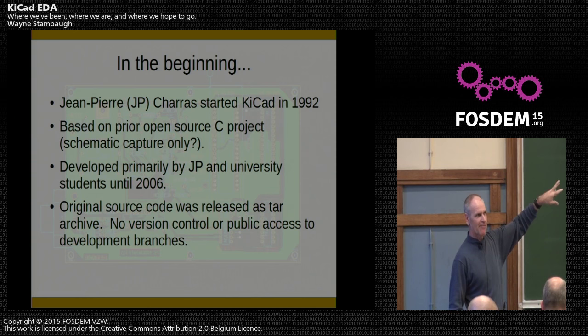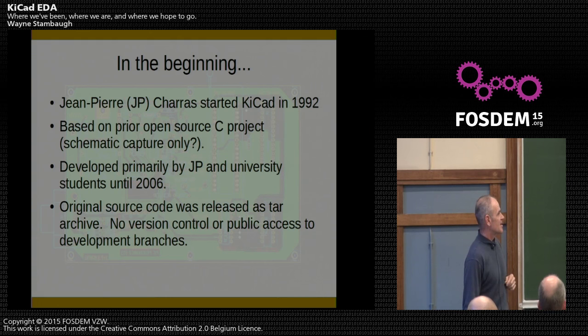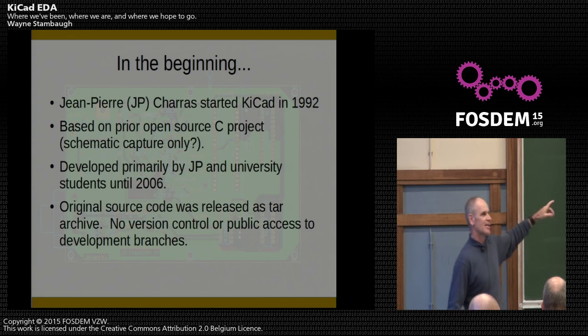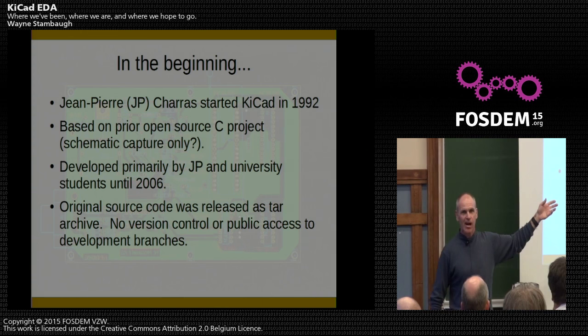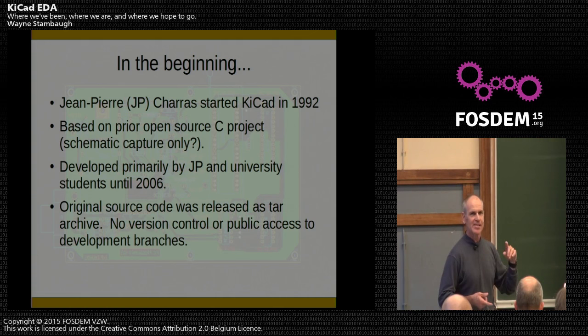Looking at the code when I first joined, I could tell some of it was probably students who had a hand in it — the code formatting was all over the map. Originally there wasn't even any collaboration. When I joined the project, if you wanted to build KiCad you had to get the tar archive, download it — there were some hand-rolled make files, but there was no version control, no public access to collaborate, no mailing list — none of the things that we take for granted now in the project.